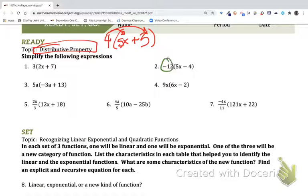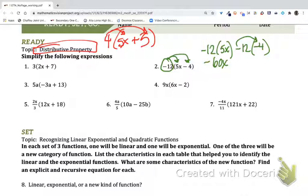For number 2, we'll take a negative 12 and distribute it to both the 5x and the minus 4. Negative 12 times 5x minus 12 times negative 4. Negative 12 times 5 is negative 60, the x stays with the term. And here, a negative 12 times a negative 4, negative times negative is a positive, so I should get positive 48. Something to keep in mind here is because these are different terms, we cannot combine them. We have an x in one term and no x in another term. Our final answer is negative 60x plus 48.